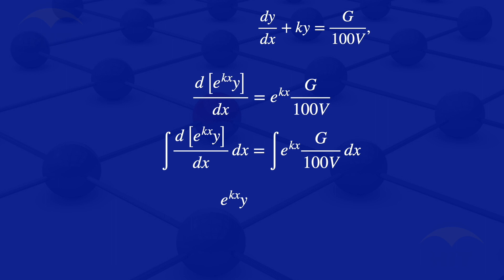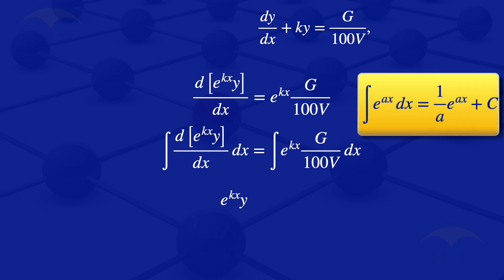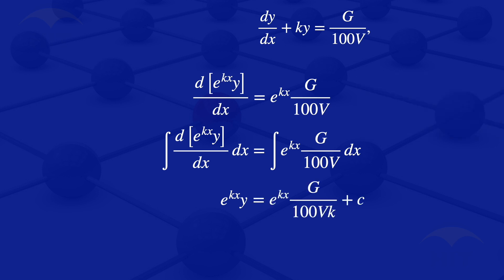On the right-hand side, we have the integral of exponent of kx, and g divided by 100v is a constant which can be taken outside the integral sign. Using the rule that the integral of exponent of ax with respect to x equals 1 over a times exponent of ax plus constant c, this integral gives exponent of kx divided by k, multiplied by g divided by 100v, plus the constant of integration c.